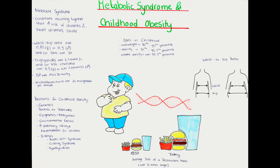So first of all, what is metabolic syndrome? It is a summary of conditions that are occurring concomitantly which increase the risk of a person to suffer from heart diseases, diabetes type 2, and also to develop a stroke.